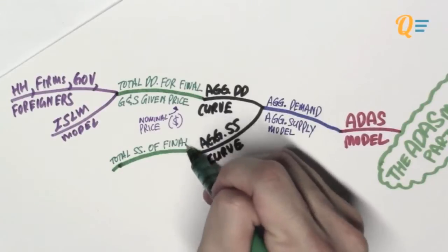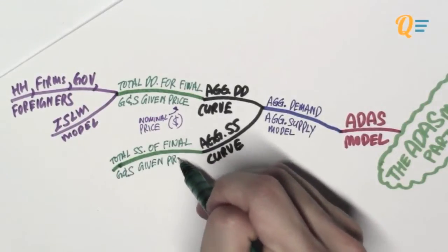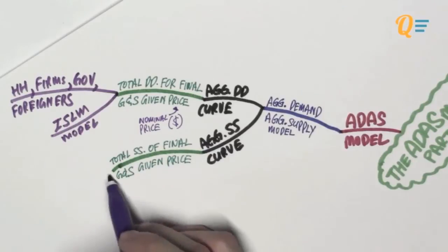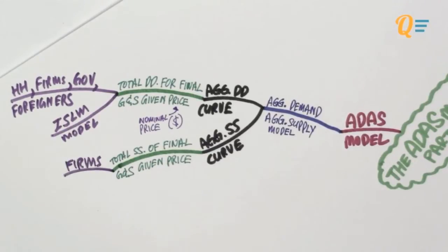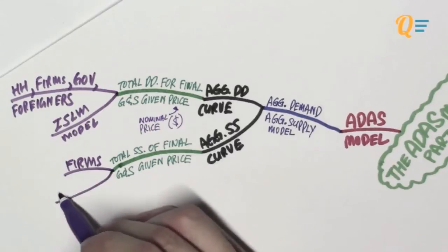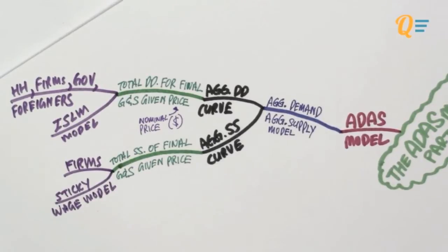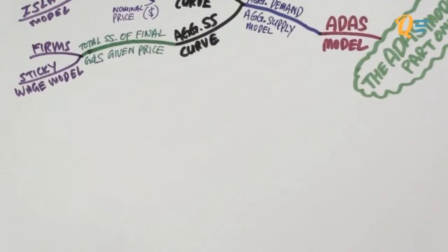Aggregate supply, on the other hand, is the total supply of final goods and services given a certain price level in an economy. Obviously, it is the firms that are providing this supply. We're also going to learn about the sticky wage model and how it is used to derive the aggregate supply curve, and why the aggregate supply curve is upward sloping.